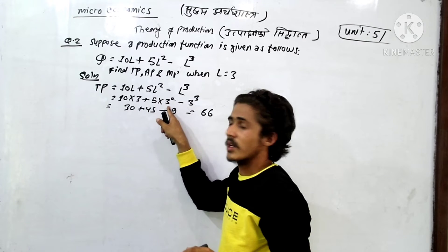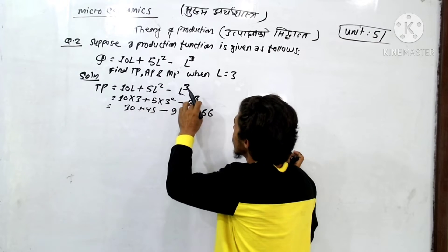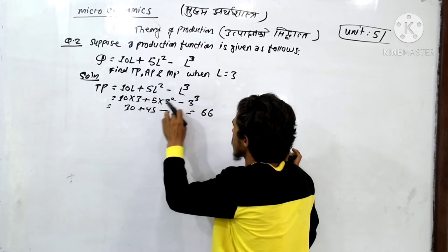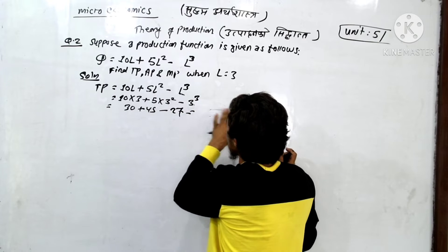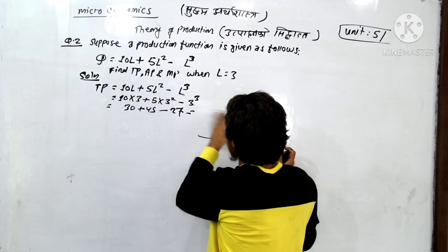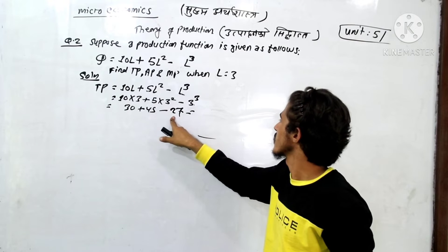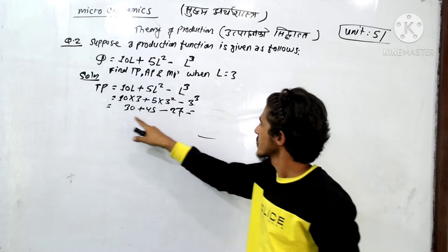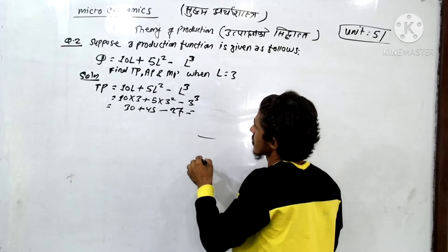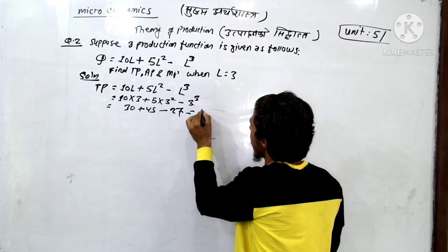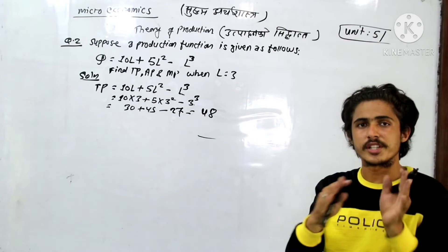5 into 3 squared: 3 squared is 9, 9 into 5 is 45, minus 3 cubed. 3 into 3 into 3 is 27. So 30 plus 45 minus 27 equals 48. TP equals 48.